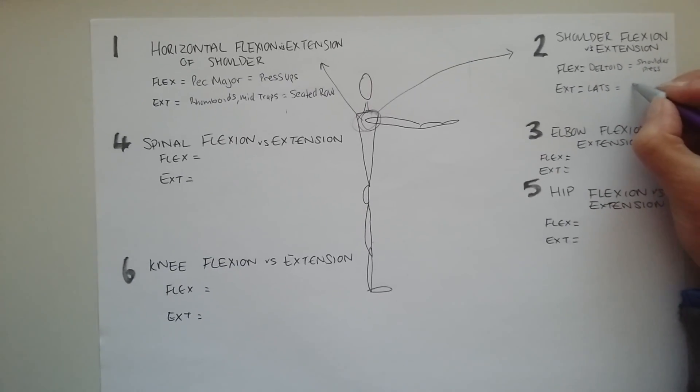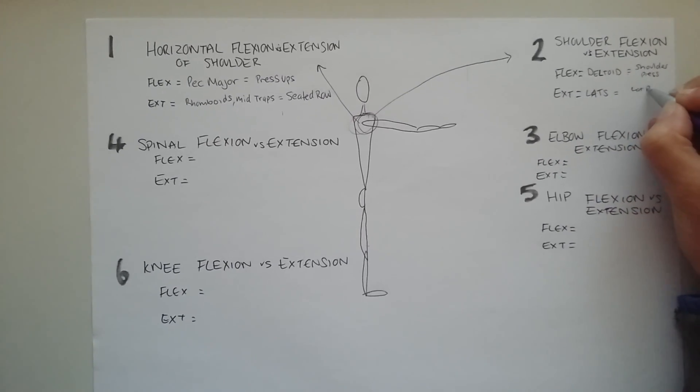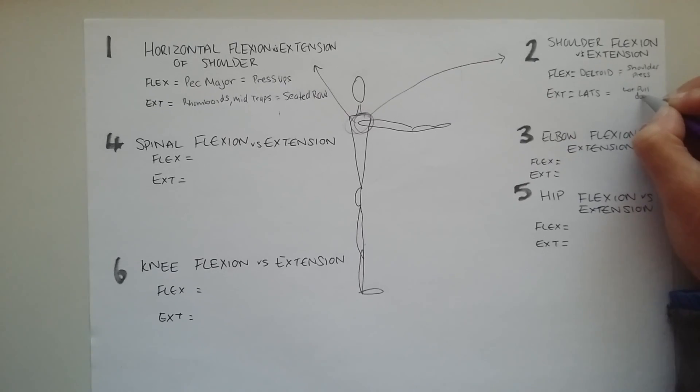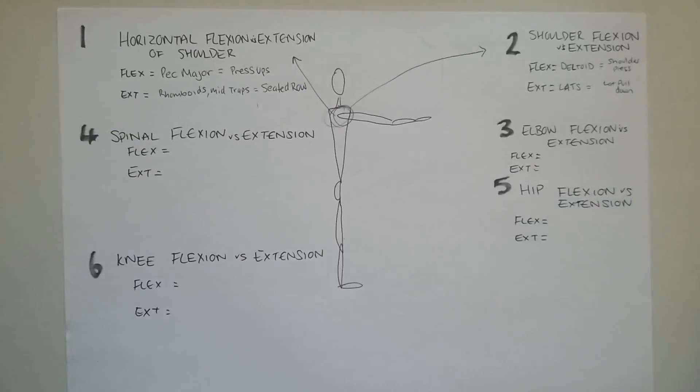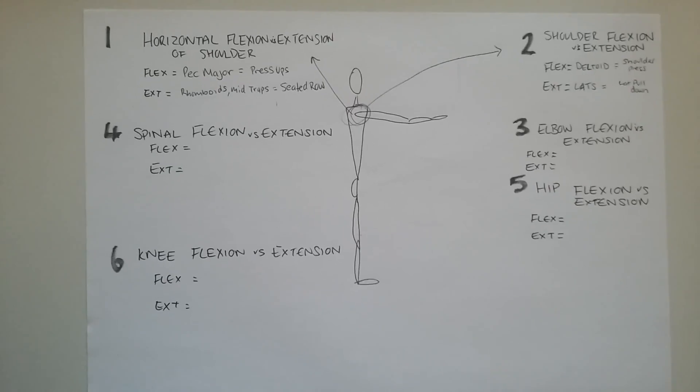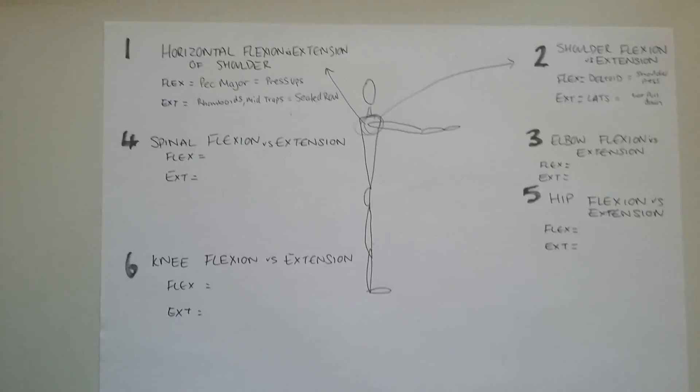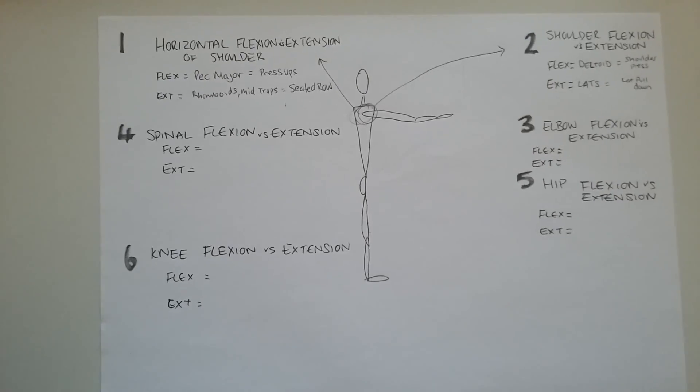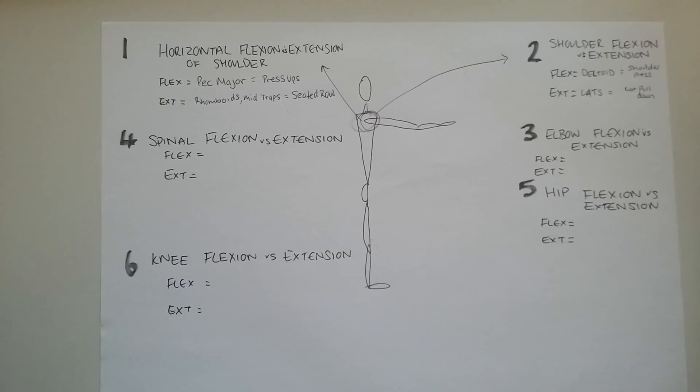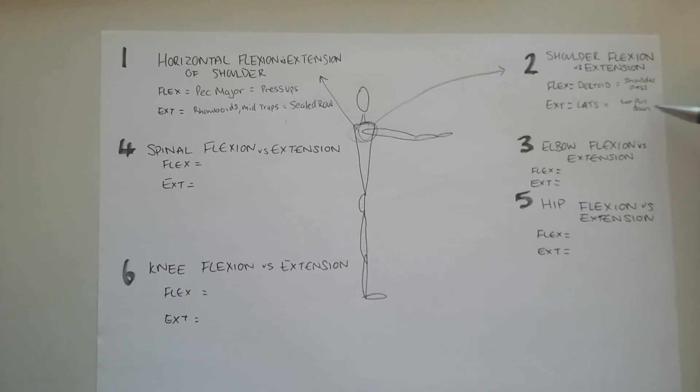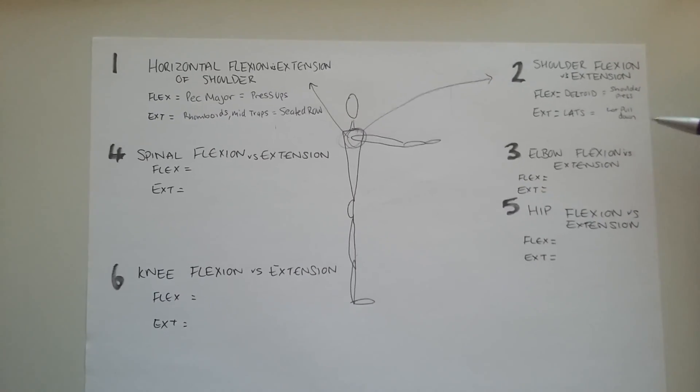Now I'm going to give that one a lat pull down. You could have a chin up, a pull up, that type of thing in here. Straight arm pull down. Anything whereby you're pulling overhead and pulling it inwards, that would work as well. So these are basically opposing exercises. They are opposite exercises.